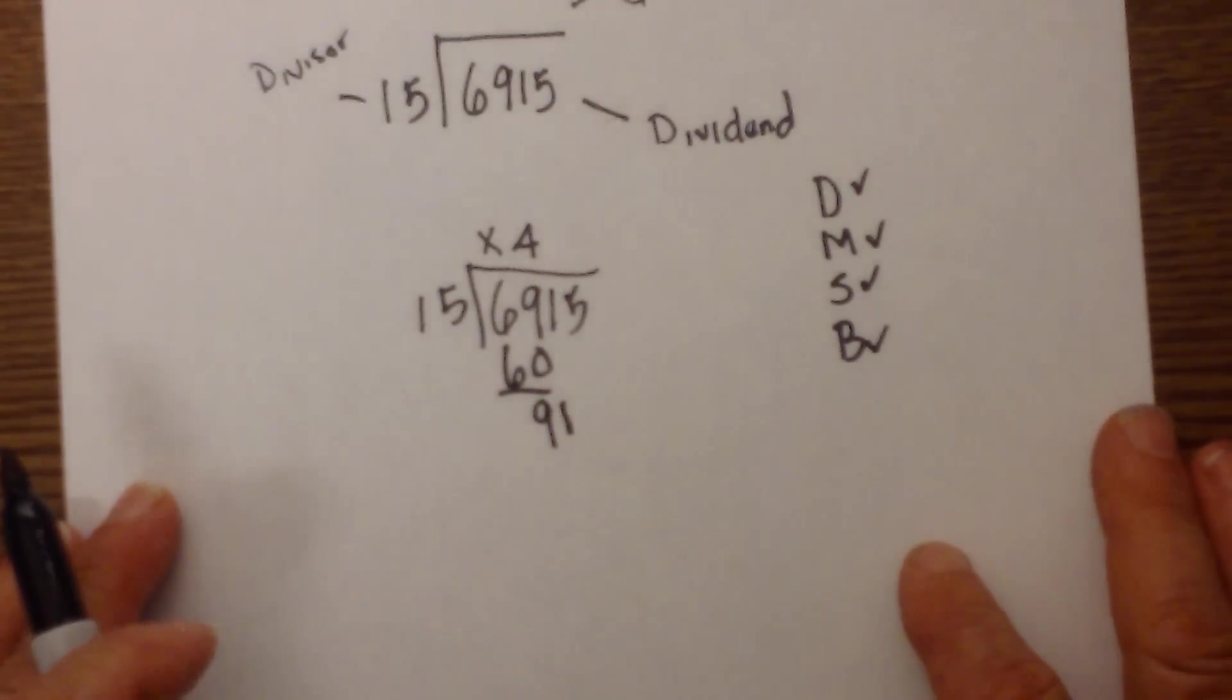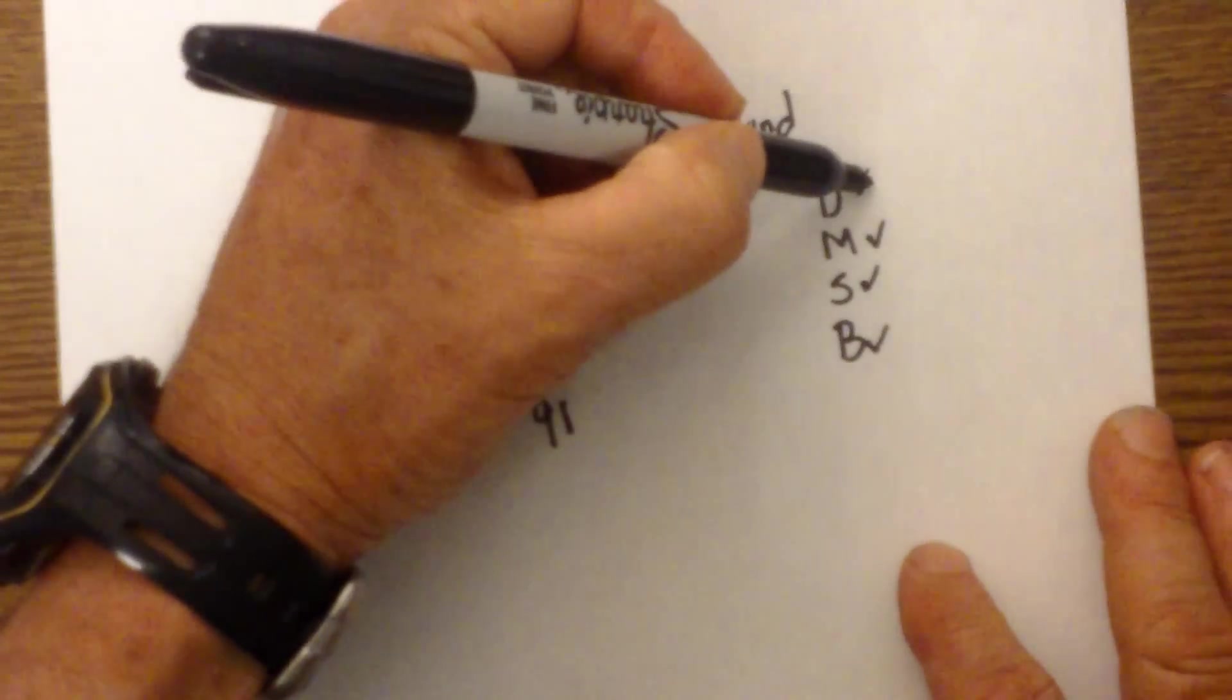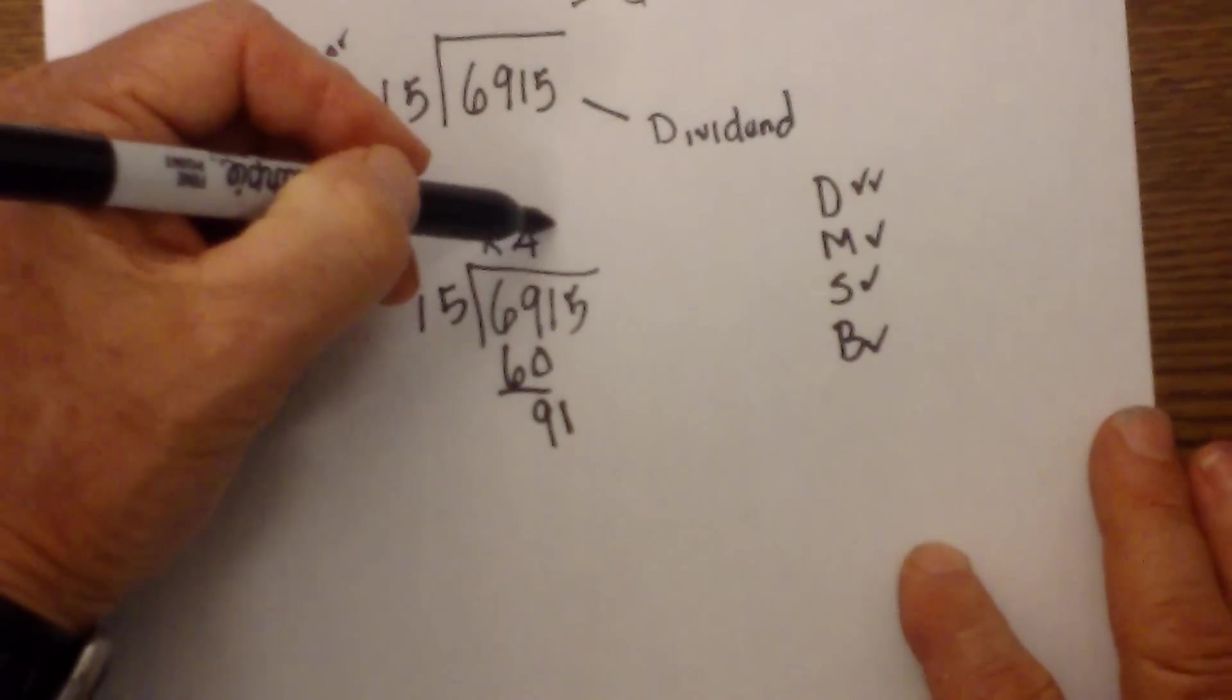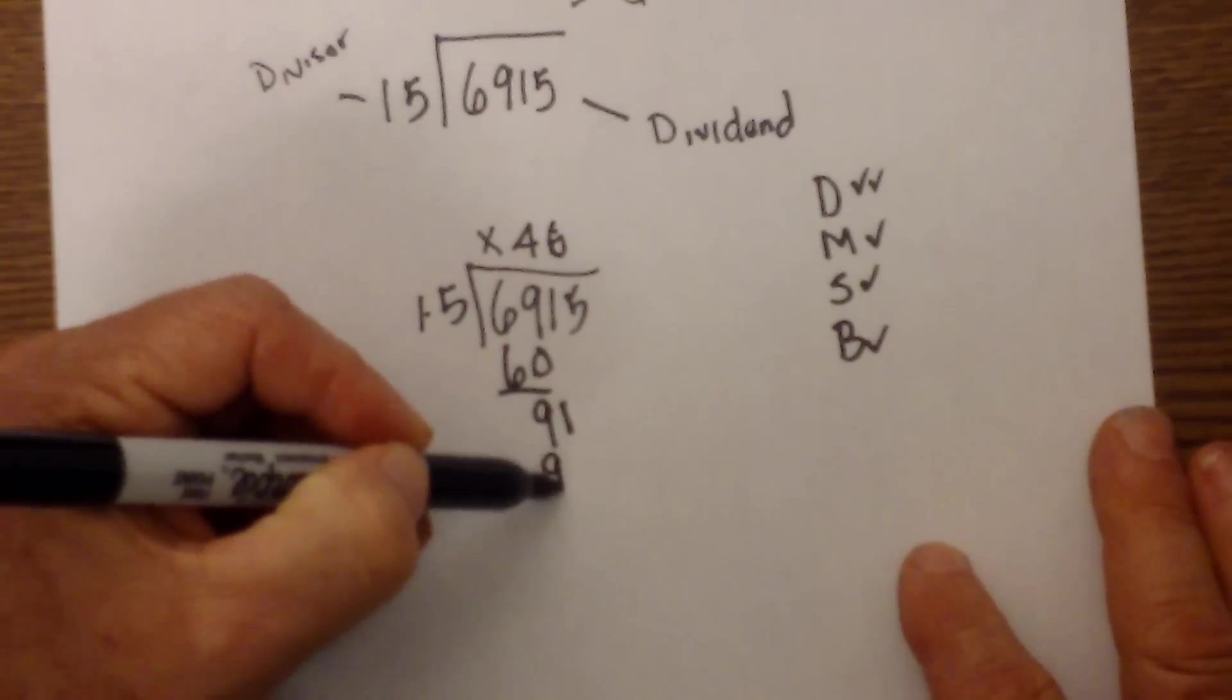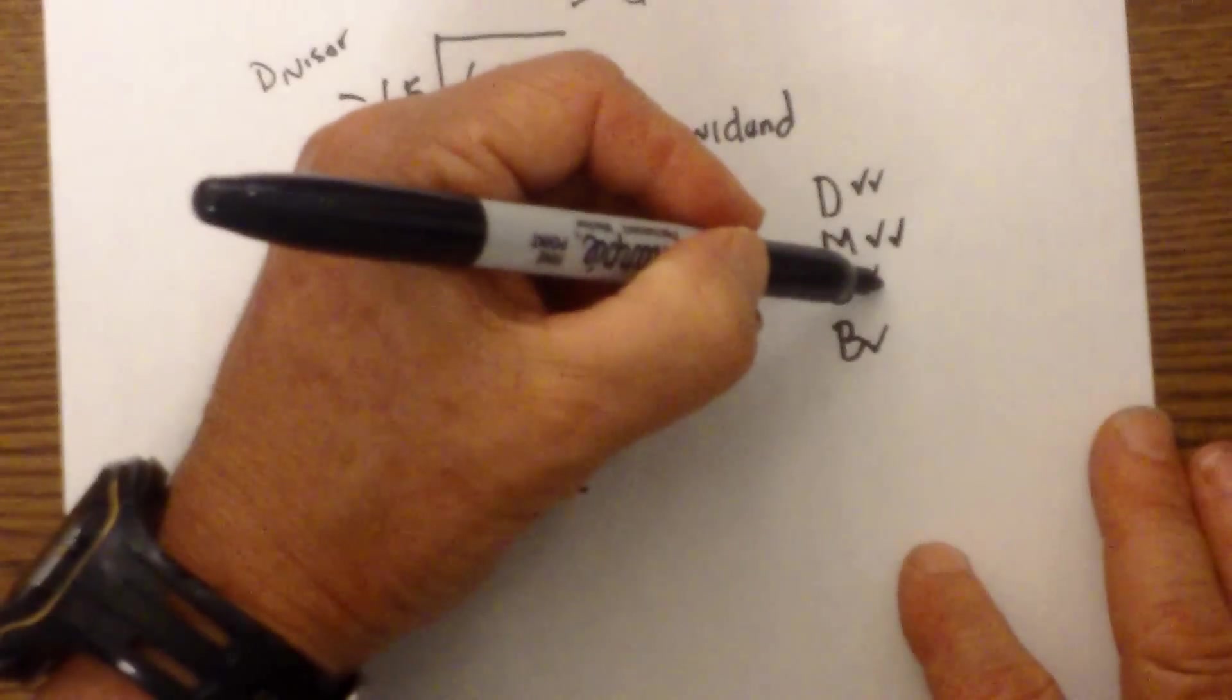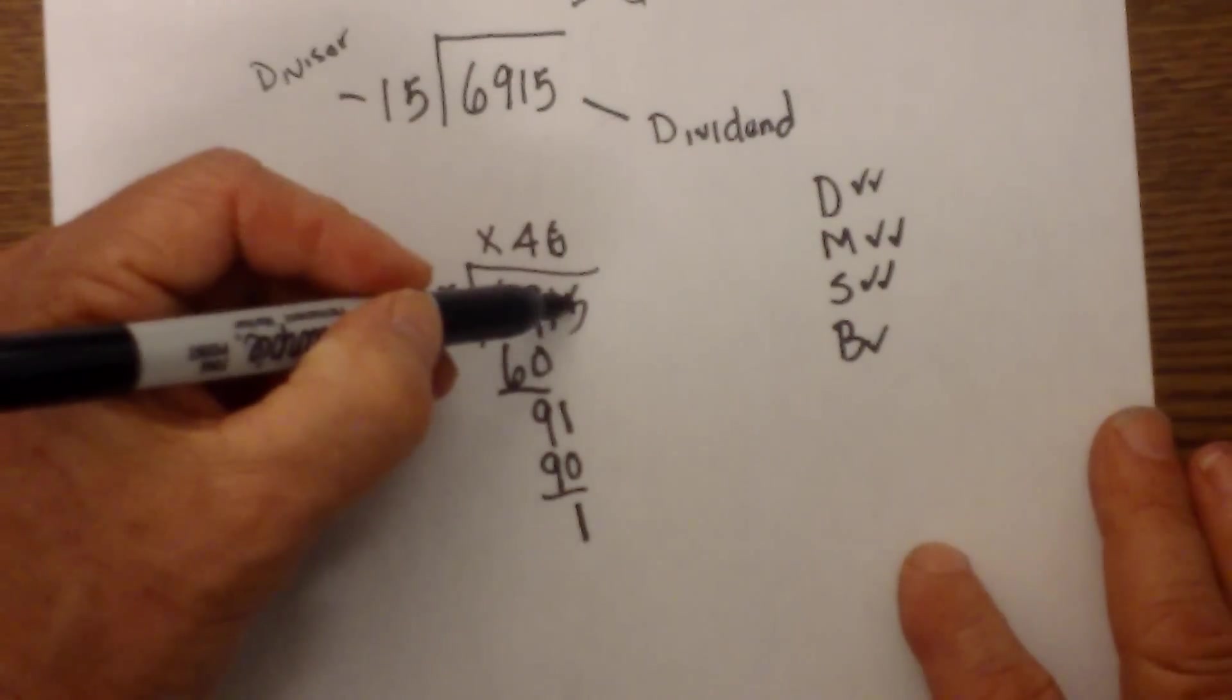Now we repeat. We divide. 91 divided by 15. 15 goes into 91 six times. 6 times 15 is 90. So we have done multiplication. Now we do subtraction. 91 minus 90 is 1. We bring down.